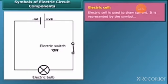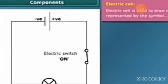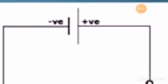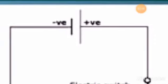Electricity is generated by chemical reaction. It has a positive terminal and a negative terminal. In the symbol of an electric cell, the longer line represents the positive terminal and the shorter line represents the negative terminal.